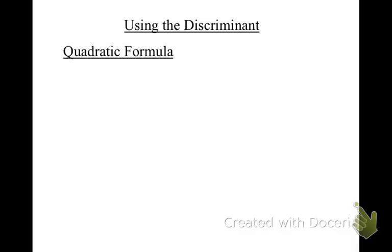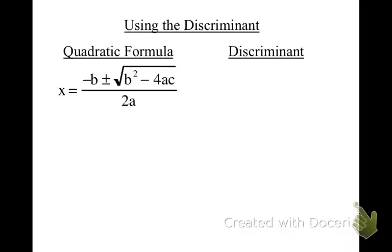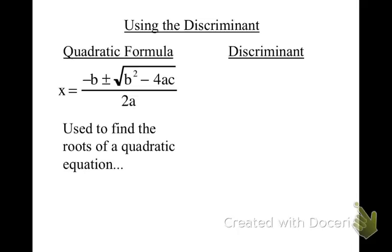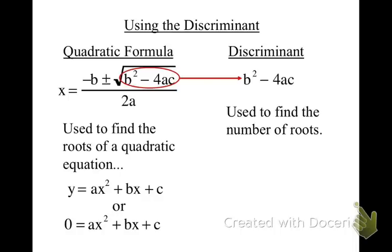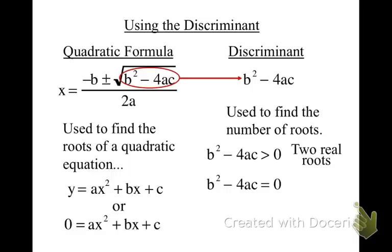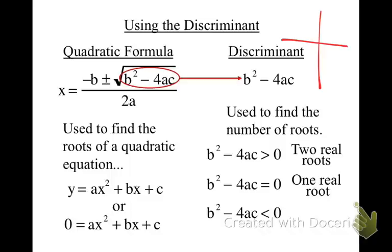The discriminant tells us a lot with only a little bit of information. The discriminant tells us how many roots we have — not what the roots are, but how many. The discriminant is the piece of the quadratic formula inside the square root: b squared minus 4ac. If b squared minus 4ac is greater than zero, we have two real roots. If it equals zero, we have one root. If it is less than zero, there are no real roots — that just means the parabola doesn't cross the x-axis.